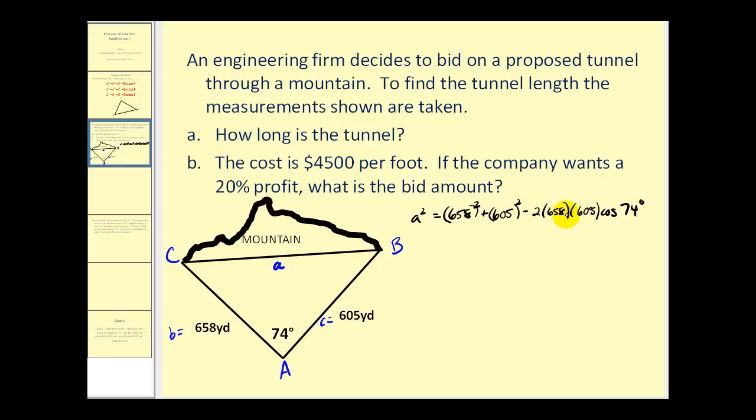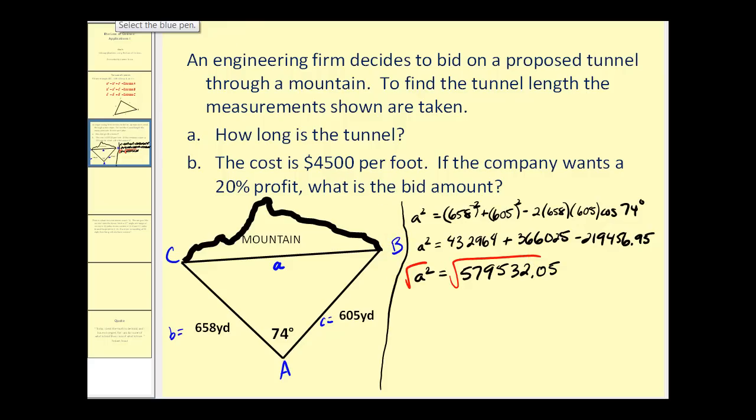Now we need to solve for A. You may want to check these on your calculator, but now we're going to add and subtract on the right side. So we have A squared equals 579,532.05. Now we can take the square root of both sides. So we have A is approximately 761 yards.